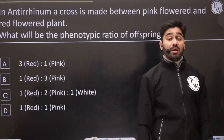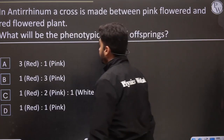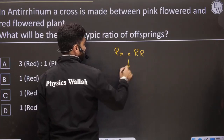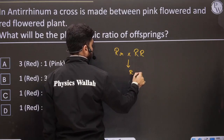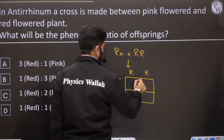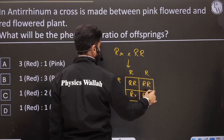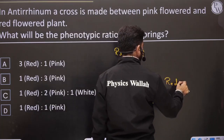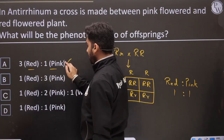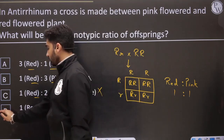In Antirrhinum, a cross is made between pink-flowered and red-flowered plant. What will be the phenotypic ratio of offspring? In Antirrhinum, pink (Rr) crossed with red (RR). The gametes: capital R from each side plus small r. The four possibilities give: capital R capital R (red), and capital R small r (pink). So the ratio is red to pink = 1:1.